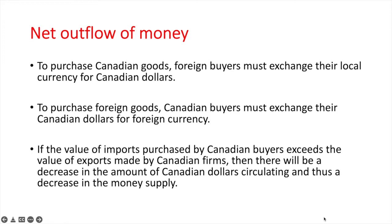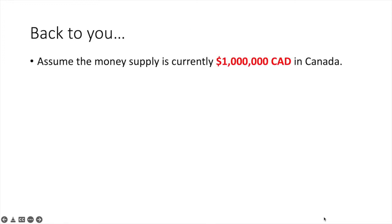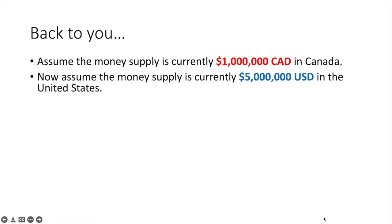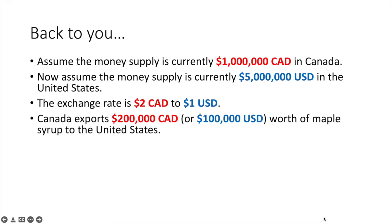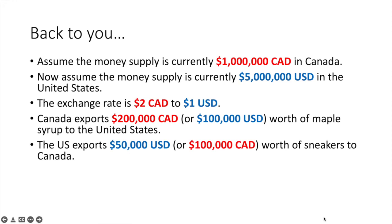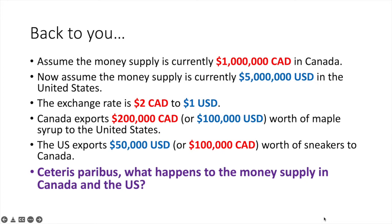Here is an example for you to try. Assume the money supply is currently 1 million Canadian dollars in Canada, and 5 million US dollars in the US. The exchange rate is 2 Canadian dollars to 1 US dollar. Canada exports 200,000 Canadian dollars or 100,000 US dollars worth of maple syrup to the US. The US exports 50,000 US dollars or 100,000 Canadian dollars worth of sneakers to Canada. Ceteris paribus, what happens to the money supply in Canada and the US? Pause the video here and try to figure it out, otherwise continue playing to see the answer.